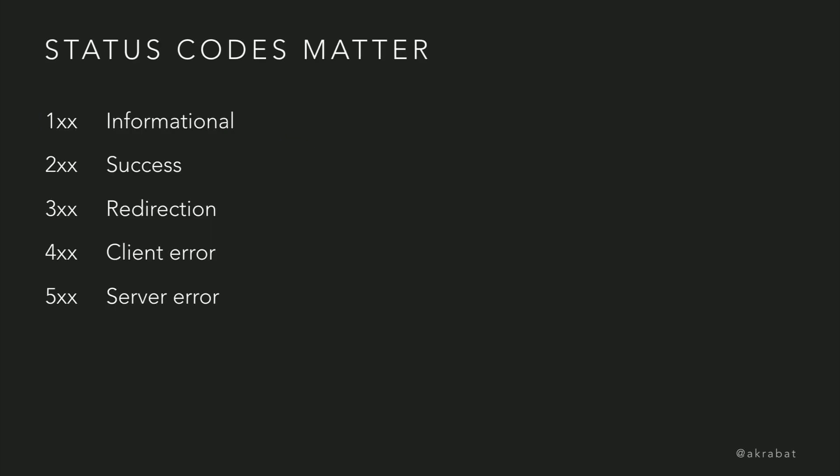Status codes — you all know them, so I don't need to say much. They matter: send the right one. Do not send an error message with a 200 status code. It's terrible how many APIs are so poor at such a basic thing. It comes back to the idea that we don't think we have a view layer in our API — but you do. The status code is part of it. Get it right.